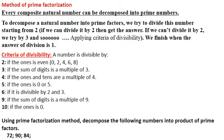We are going to use the prime factorization method. This method says that every composite natural number can be decomposed into prime factors or prime numbers. The prime numbers are 2, 3, 5, 7, 11, 13, etc. To decompose a natural number into prime factors, we try to divide it starting from number 2. If we can't divide it by 2, we try by 3, and so on. We should apply the criteria of divisibility of numbers. The prime factorization finishes when the answer of the division is 1.